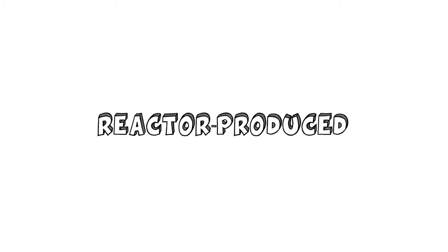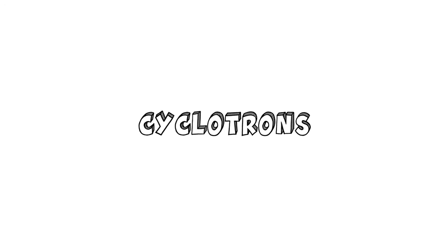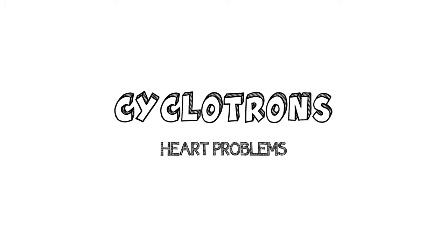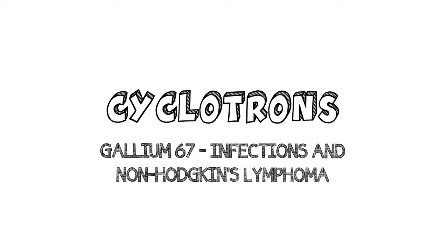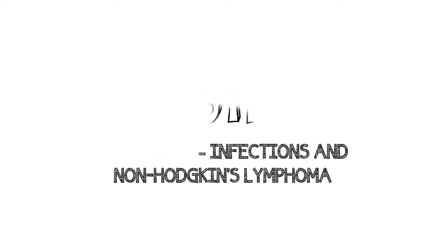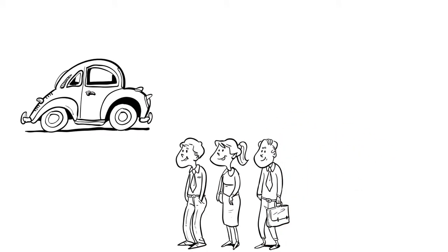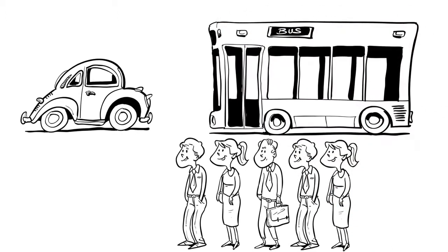While 80% of nuclear medicine procedures are reactor produced, some are produced in a different kind of device called a cyclotron. They make things such as Fluorine-18 for PET studies which are used for diagnosis of cancers, heart problems, and other things, and gallium-67 which is used for infections and non-Hodgkin's lymphoma. Cyclotrons are a valuable part of the radionuclide production landscape, and they have a specific purpose like anything else. You wouldn't use a VW Beetle the same way you'd use a bus, right?